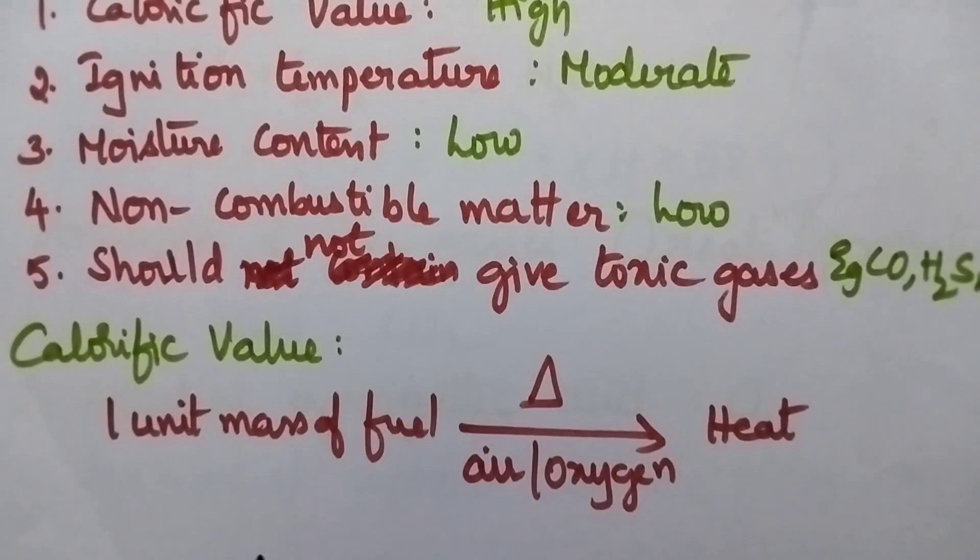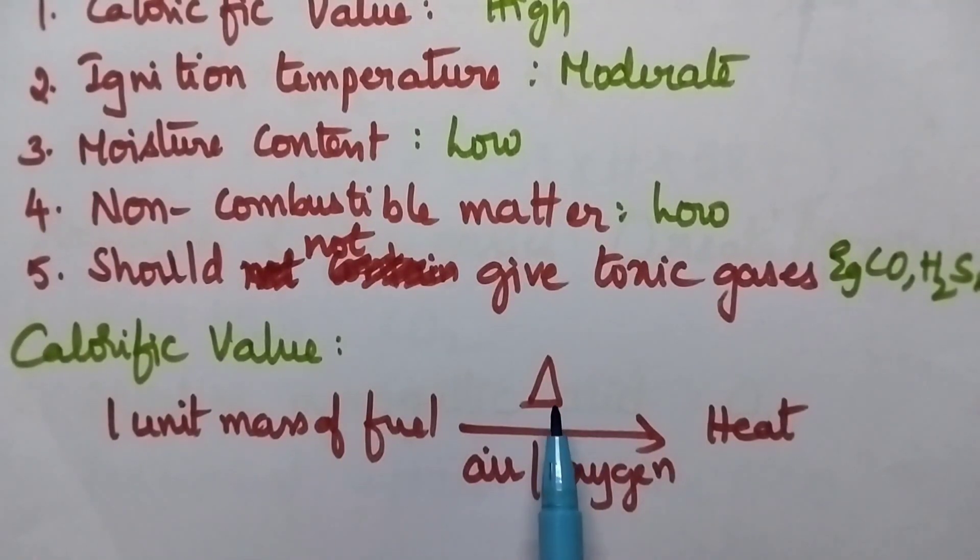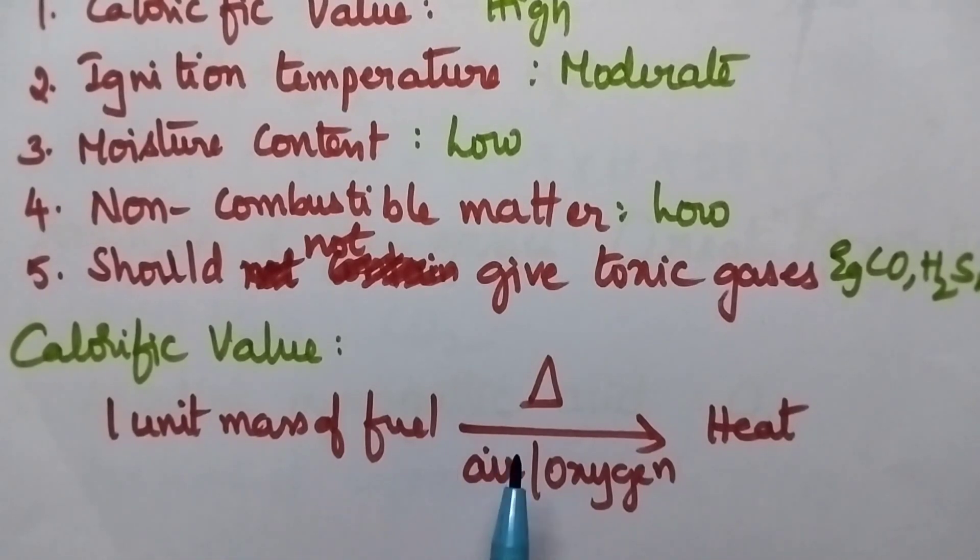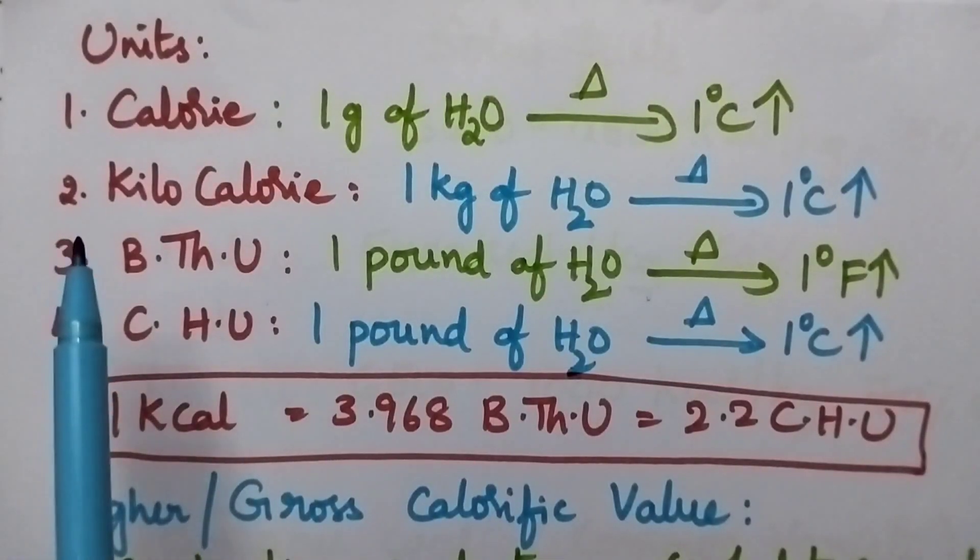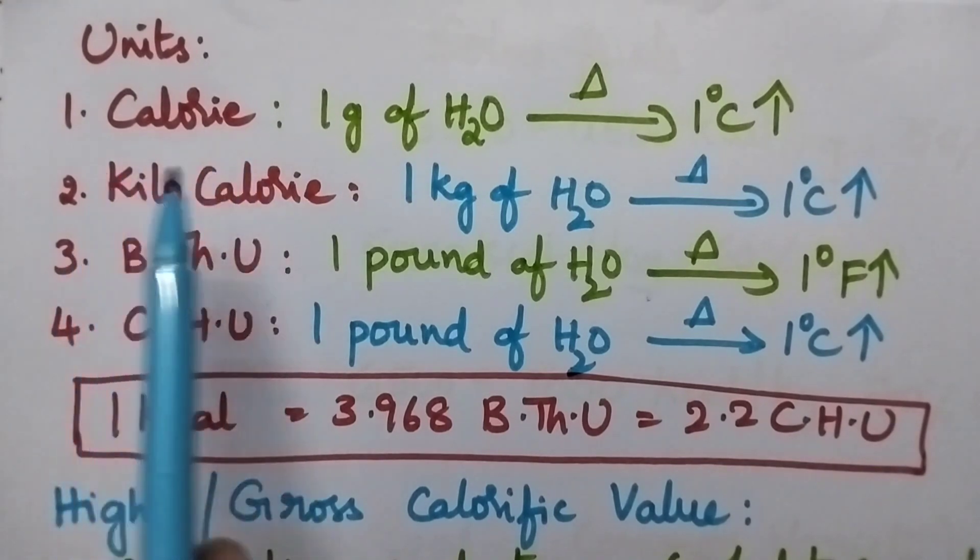Calorific value can be defined as the total quantity of heat liberated when unit mass of the fuel is burnt completely in the presence of air or oxygen. Units to express calorific value are calorie, kilocalorie, British thermal unit and centigrade heat unit.